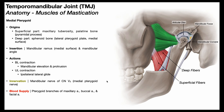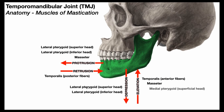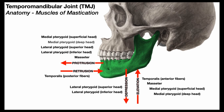When the medial pterygoids contract bilaterally, we get mandibular elevation and mandibular protrusion. When they contract unilaterally, it produces ipsilateral lateral glide of the mandible. The medial pterygoids are innervated by the medial pterygoid nerve, a branch of the mandibular nerve of cranial nerve 5. Blood supply is provided by pterygoid branches of the maxillary artery, the buccal artery, and the facial artery. Both the superficial and deep heads produce mandibular elevation and protrusion.